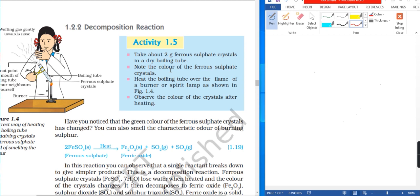Heat the boiling tube over the flame of a burner or spirit lamp as shown in the figure. Observe the color of the crystals after heating. In this activity, the ferrous sulphate crystals have changed.